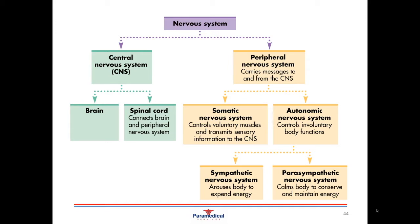The autonomic nervous system is all the involuntary or subconscious actions that happen in the body that we don't have to think about. These include different functions such as all the processes of digestion, the endocrine system releasing its hormones, our heart beating, our blood vessels changing shape and size, and also partially our respiratory drive.